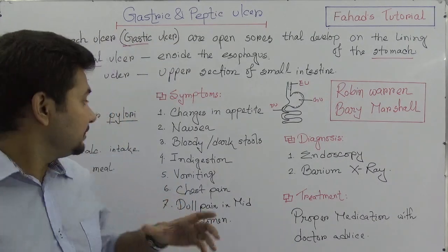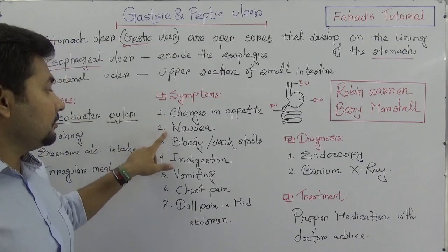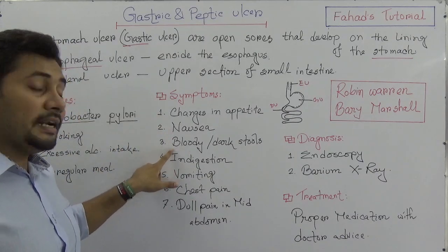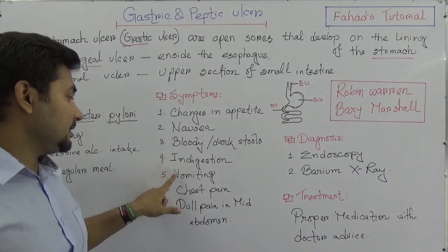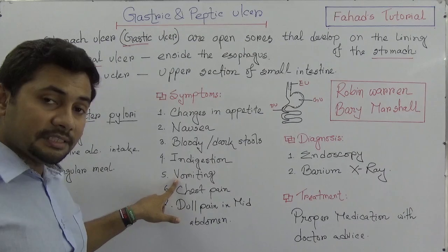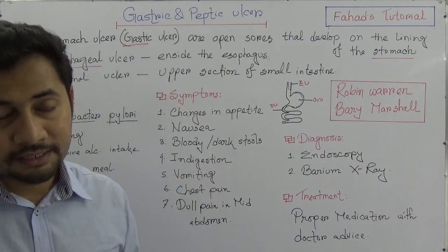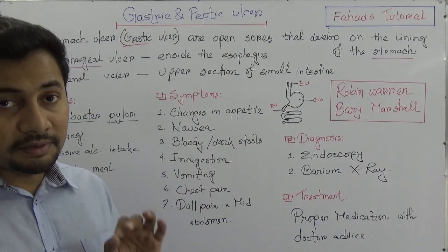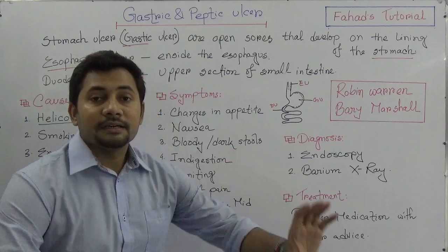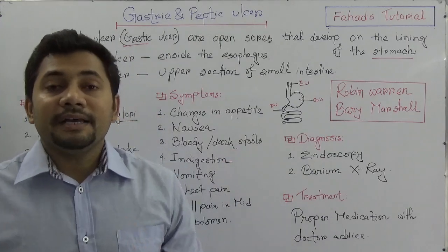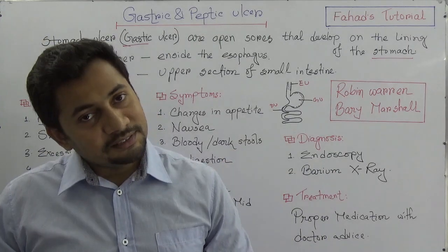The main symptoms are: changes in appetite, nausea, bloody or dark stools, indigestion, vomiting, chest pain, and dull pain in the mid-abdomen.